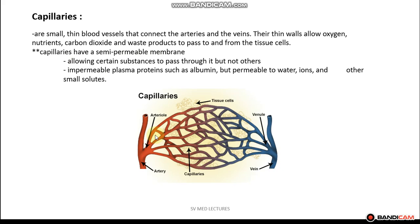So what are capillaries? Capillaries are small, thin blood vessels that connect the arteries and the veins. Their thin walls allow oxygen, nutrients, carbon dioxide, and waste products to pass to and from the tissue cells. Capillaries have a semi-permeable membrane, which means they allow certain substances to pass through but not others. They are impermeable to plasma proteins, but permeable to water, ions, and other small solutes.